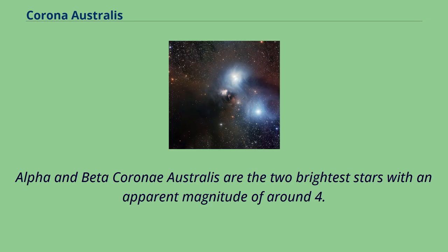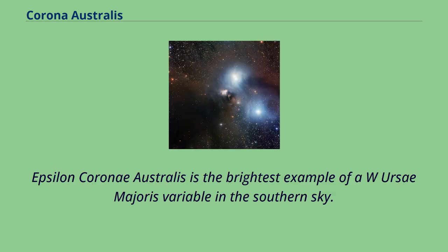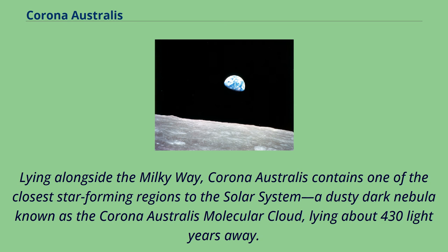Alpha and Beta Corona Australis are the two brightest stars with an apparent magnitude of around 4.1. Epsilon Corona Australis is the brightest example of a W Ursae Majoris variable in the southern sky. Lying alongside the Milky Way, Corona Australis contains one of the closest star-forming regions to the solar system, a dusty dark nebula known as the Corona Australis Molecular Cloud, lying about 430 light-years away.